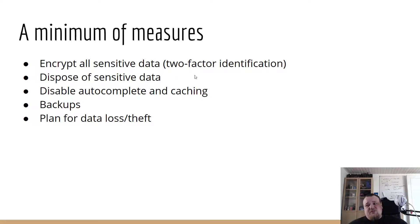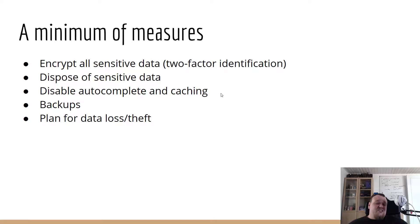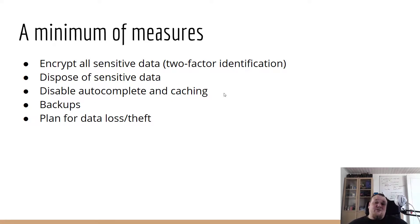Dispose of all sensitive data. If you have some sensitive data stored in your application that you don't need — well, delete it. Also disable autocomplete and caching. If your application has an autocomplete feature or is caching things people typed in, disable it. Have your backups and plan for data loss or data theft. What will you do if things go wrong? If you have backups, great. If you don't, that's a really, really bad thing. So those are the minimum measures you should be doing.